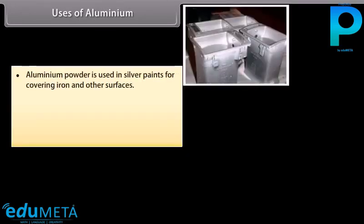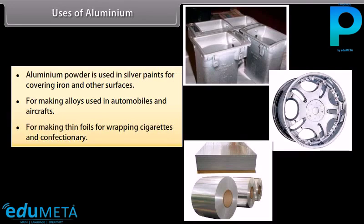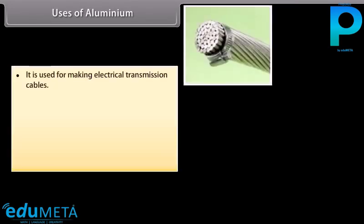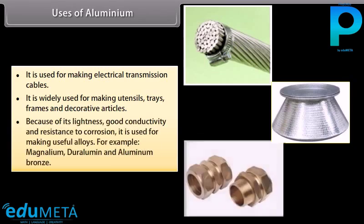Uses of Aluminium: Aluminium powder is used in silver paints for covering iron and other surfaces. It is used for making alloys for automobiles and aircraft, thin foils for wrapping cigarettes and confectionery, and electrical transmission cables. It is widely used for making utensils, trays, frames, and decorative articles. Because of its lightness, good conductivity, and resistance to corrosion, it is used in alloys such as Magnalium, Duralumin, and Aluminium bronze.